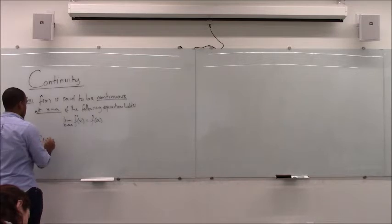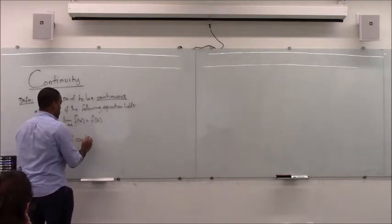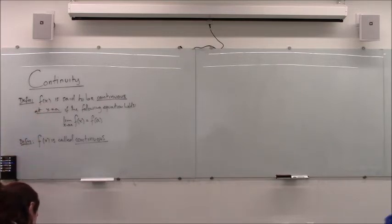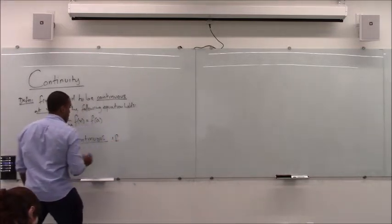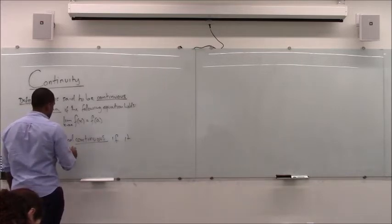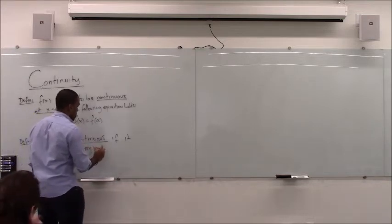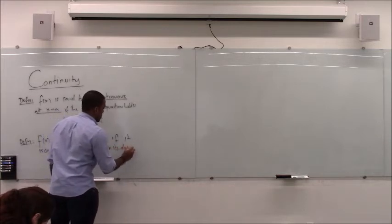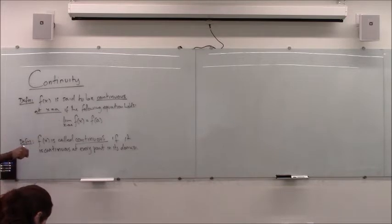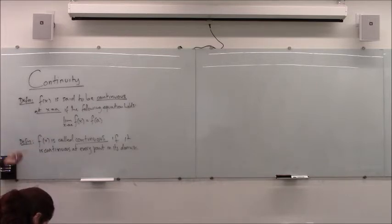There's a distinction between continuous at a certain location — continuous at x equals a — versus continuous in general. f of x is called continuous if it is continuous at every point in its domain. So a continuous function means no matter what point you pick on that graph, this equation is going to work out. But at specific points, that equation working out means it's continuous at that specific point.